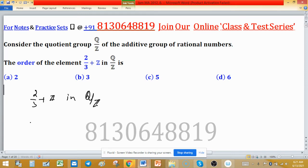In general, we can find the order of an element p/q + Z in Q/Z. This is the additive group of rational numbers.